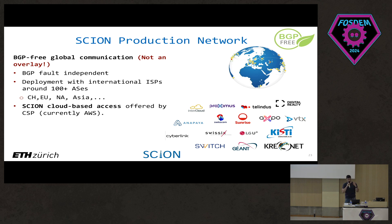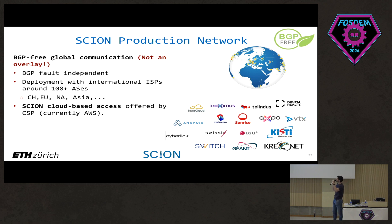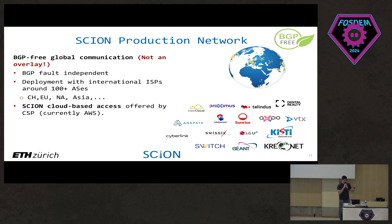The production network is not an overlay — it's a real fabric and is BGP-free. It is currently deployed by several international ISPs. There are over 100 ASes distributed in Switzerland, the EU, North America, and Asia. Recently, SCION cloud-based access has also been enabled as a commercial offering, so anyone with cloud deployments can access the production network.